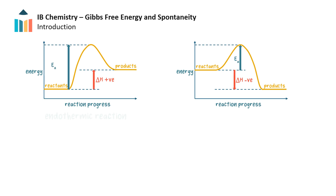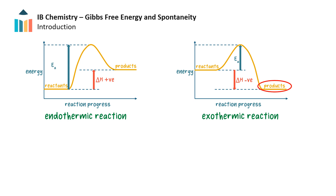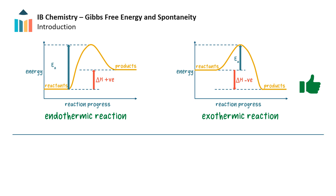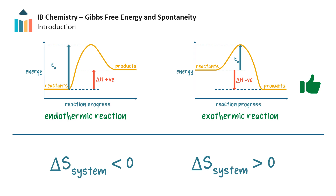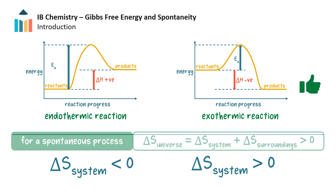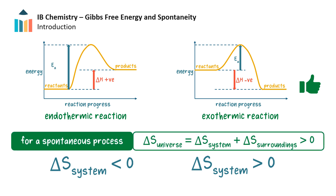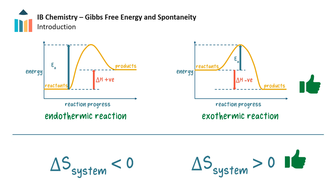Some reactions are endothermic and some are exothermic. Since the products of an exothermic reaction are in a lower energy state, exothermic reactions are often more energetically favourable. Some reactions result in a decrease in entropy of the system, but some occur with an increase in entropy. It is important to remember that for spontaneous reactions, in both cases the entropy of the universe increases. An increase in entropy of a system is generally more favourable, as systems tend to naturally move towards greater disorder or randomness.